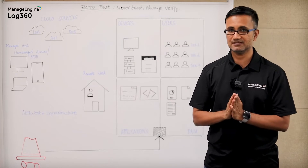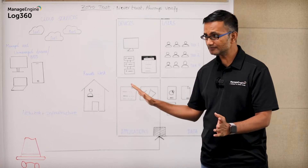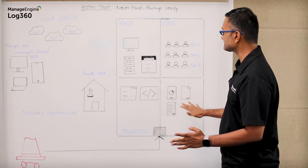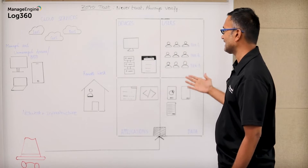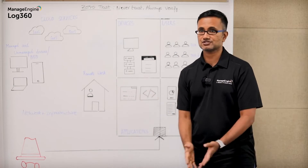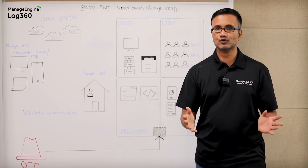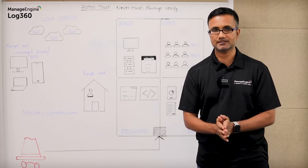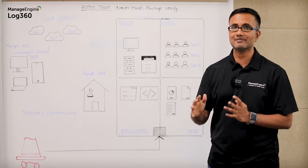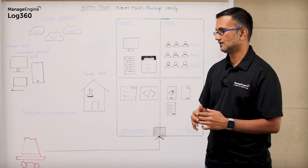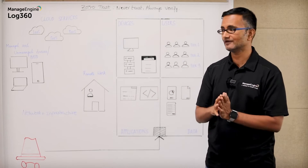Here is the actual architecture of the Zero Trust model. If you look at the elements, you've got users, endpoints such as devices, data, and applications, and you've also got the network and infrastructure. You may realize that this is not different from what you would have in any traditional network — all these elements are the same. But how you manage the interactions, the data flow, and the access that different people have — that's what makes a Zero Trust model very different.